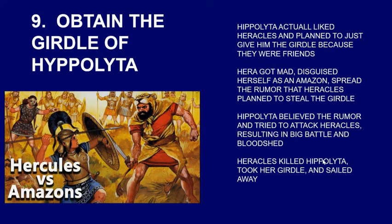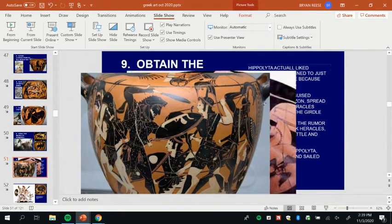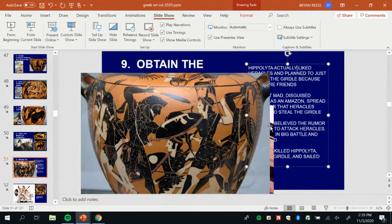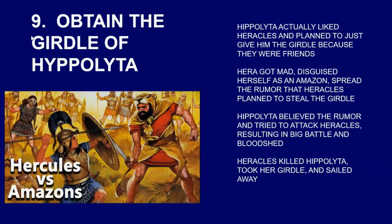The ninth labor of Heracles was to bring back the girdle of Hippolyta, who was the queen of the Amazons. Hippolyta actually liked Heracles and planned to give him the girdle because they were friends. But Hera got mad — remember, Hera hated Heracles — and disguised herself as an Amazon, spreading the rumor that Heracles planned to steal the girdle. Hippolyta believed the rumor and tried to attack Heracles, resulting in a big battle and bloodshed. Heracles killed Hippolyta, took her girdle, and sailed away. This is a red figure of Heracles attacking Hippolyta, and here is Heracles fighting the Amazons.